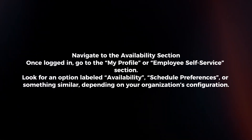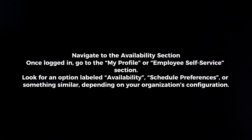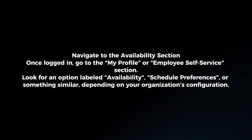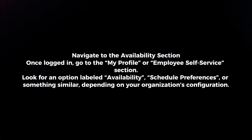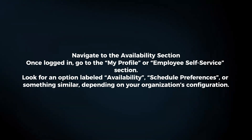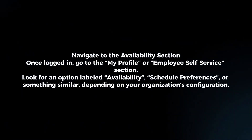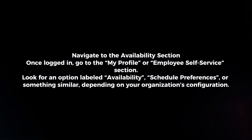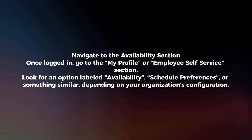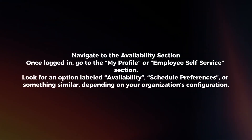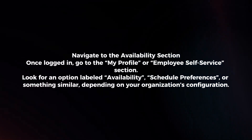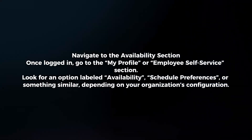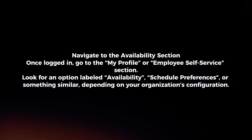Navigate to the availability section. Once logged in, go to the My Profile or Employee Self-Service section. Look for an option labeled Availability, Schedule Preferences, or something similar, depending on your organization's configuration.